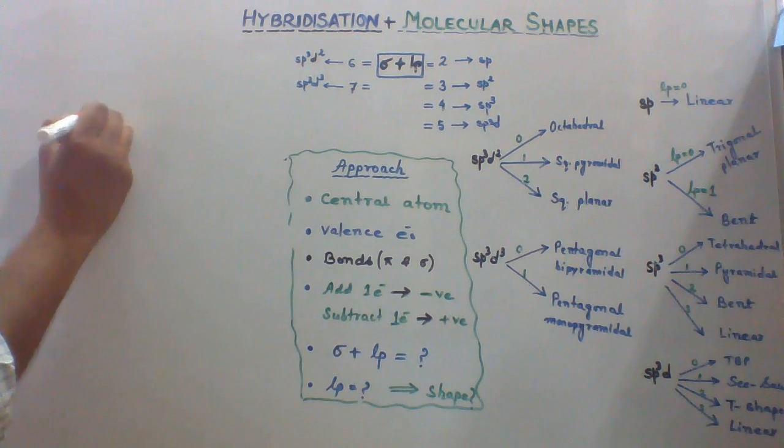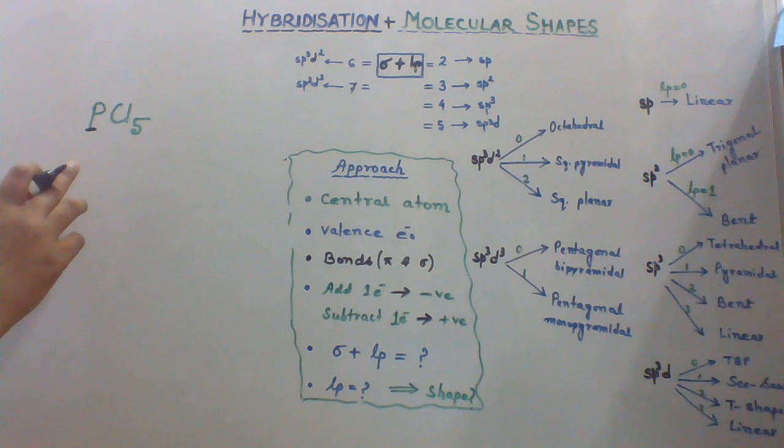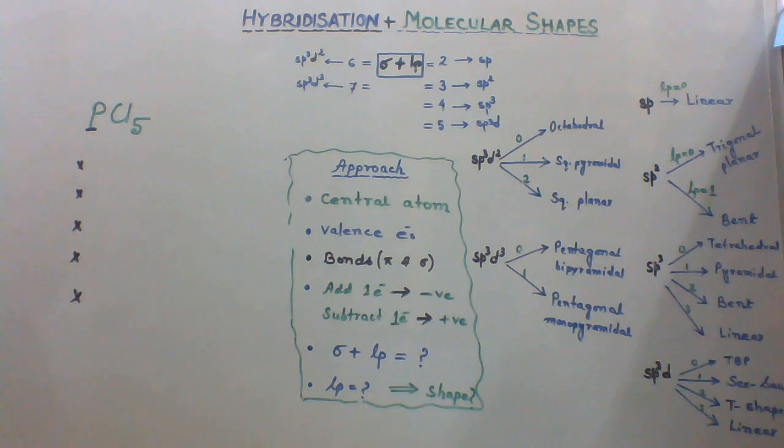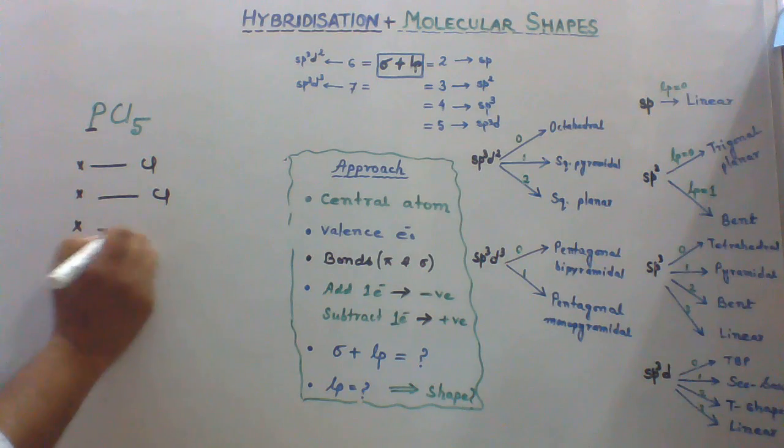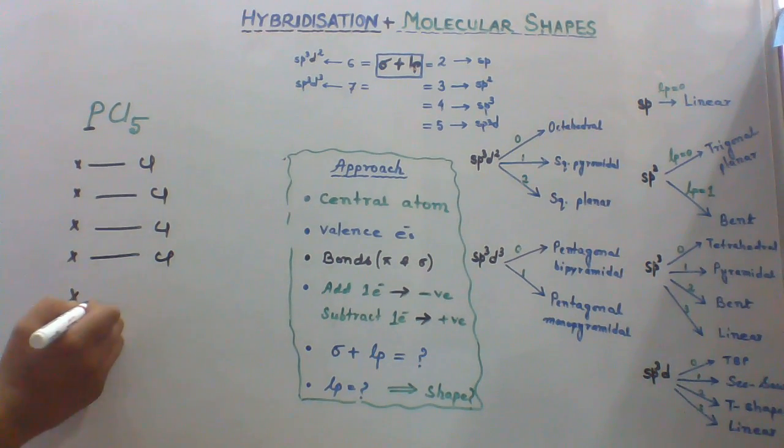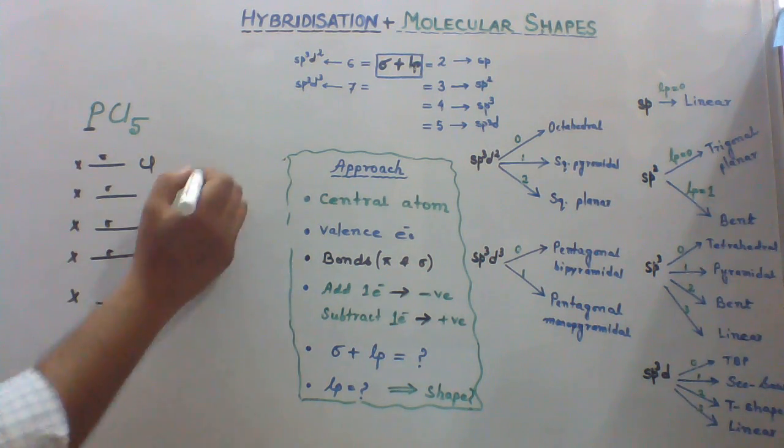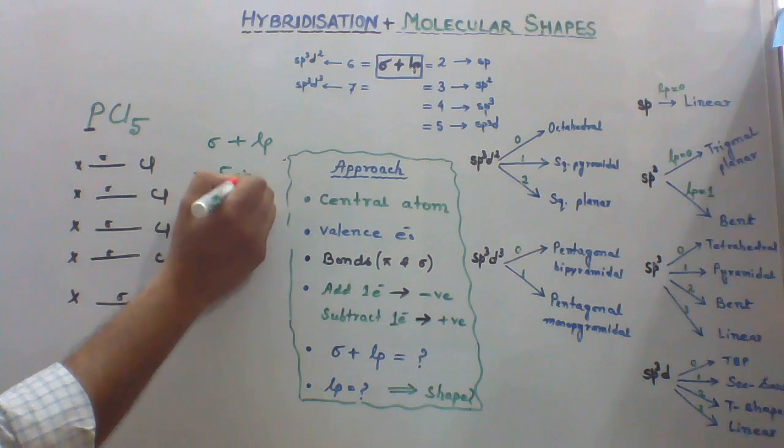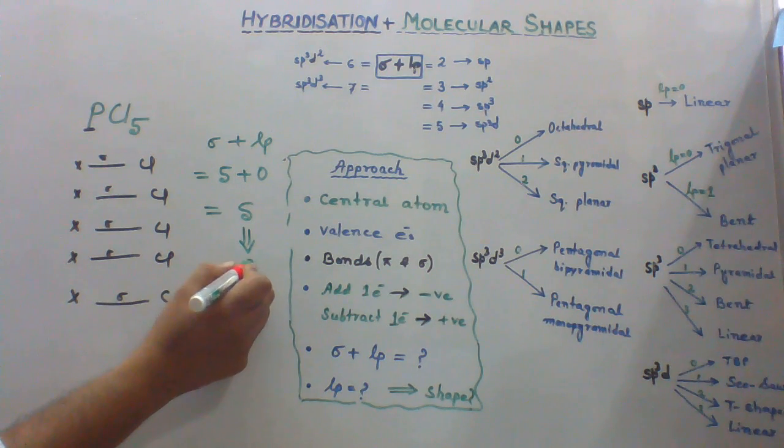Now let's take the species PCl5. Phosphorus is the central atom here and it has 5 valence electrons. 5 chlorine atoms are bonded. Each chlorine atom has valence 1 so forming 5 sigma bonds. So summation of sigma and lone pair 5 plus 0 equals 5. This corresponds to sp3d hybridization.